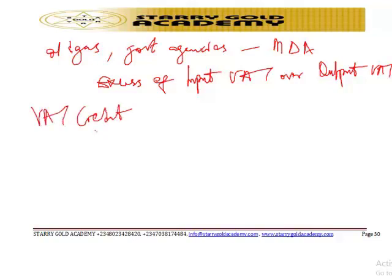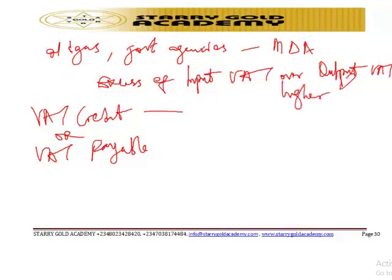The net VAT after these adjustments may either result in a VAT credit or VAT payable. You have a VAT credit when your input VAT is higher than the output VAT. When your output VAT is higher than the input VAT, then you have VAT payable.